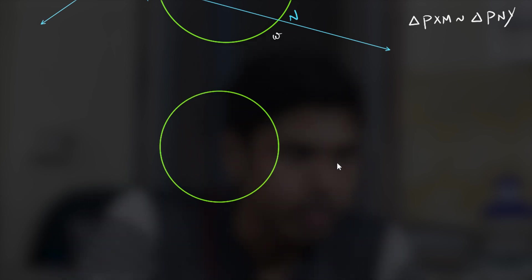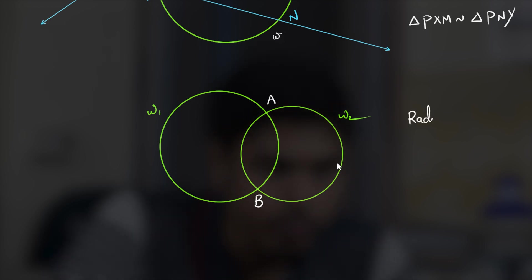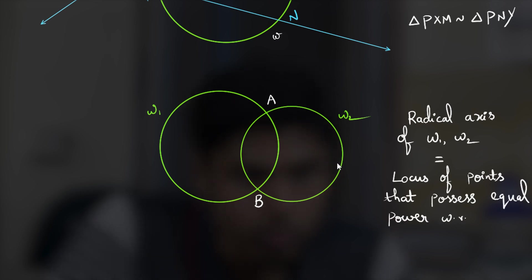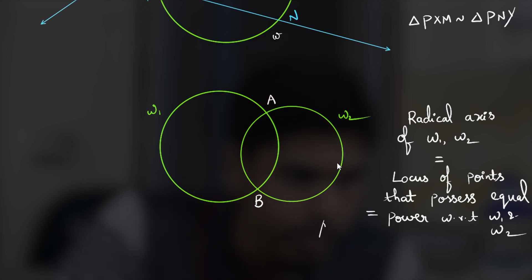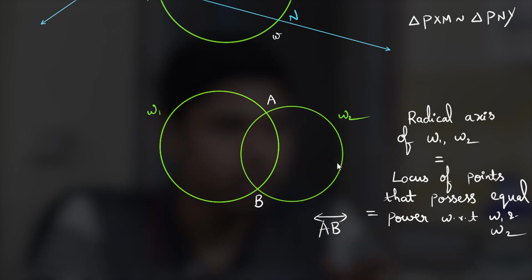Consider two circles that are intersecting say omega 1 and omega 2. Say they intersect at two points A and B. Then the radical axis of omega 1 comma omega 2 is defined as the locus of points that possess equal power with respect to both circles and this will turn out to be AB the line determined by the points of intersection.